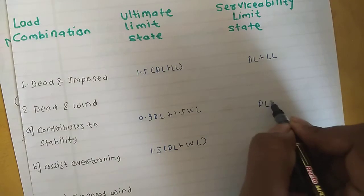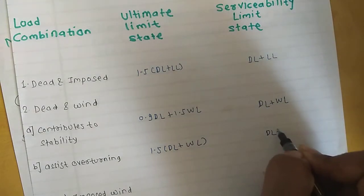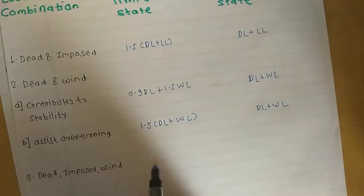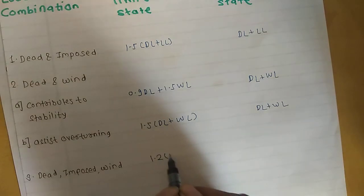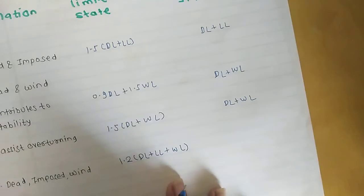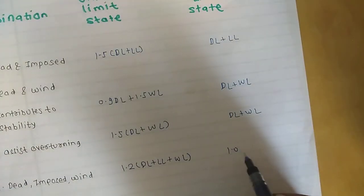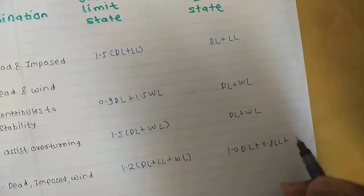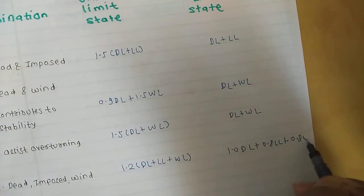When the combination includes dead, live, and wind loads, it is 1.2 times dead load plus live load plus wind load. For serviceability, it is 1.5 dead load plus 0.8 live load plus 0.8 wind load.